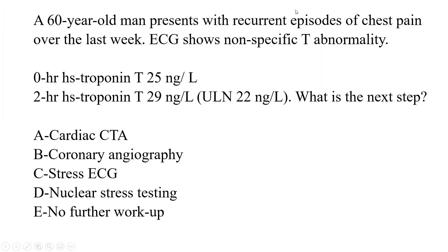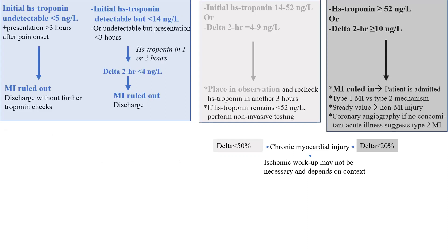Whenever you see high sensitivity troponin, remember to analyze two things: the absolute value as well as the delta. Using the troponin T assay algorithm — three categories. The easiest: when you have undetectable or low high sensitivity troponin below 14, below the 99th percentile, with very little delta. Those patients are ruled out and can be discharged home with no further workup.